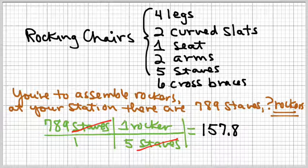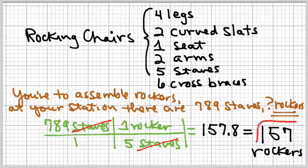So, I get a raw number of 157.8 rockers. Again, these are rockers. We can't have a portion of a rocker. We've got to have whole rockers. So, we round this down to 157 rockers.